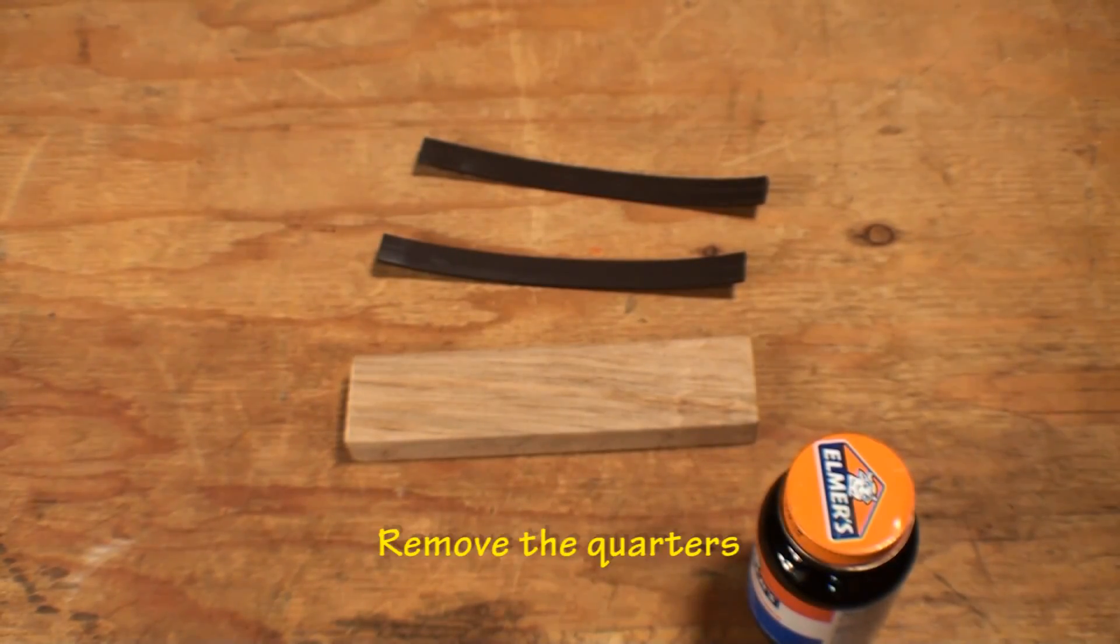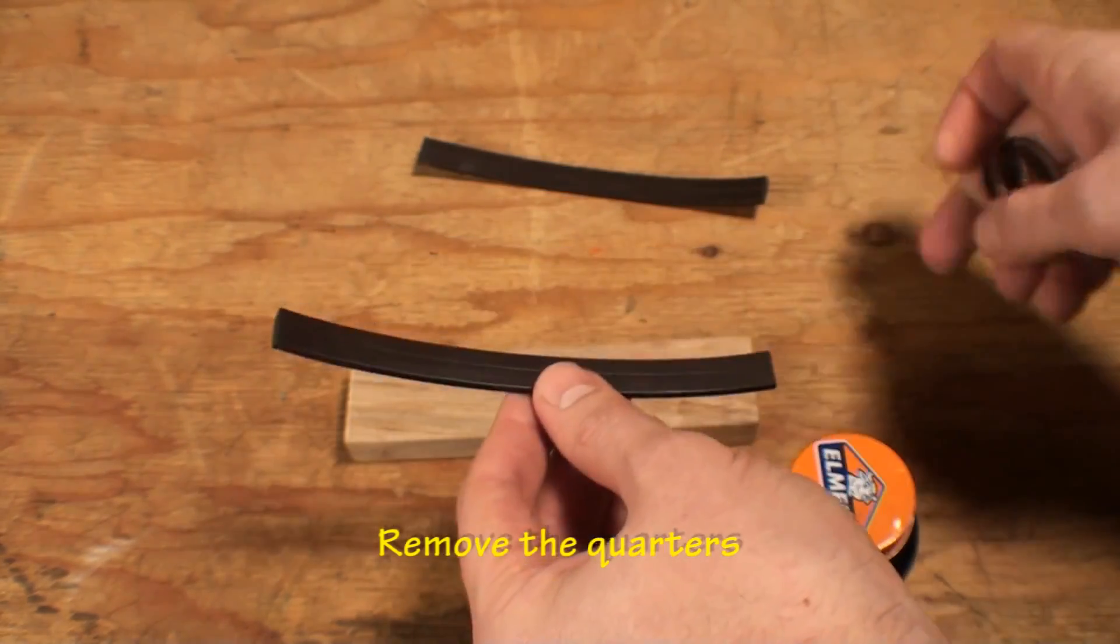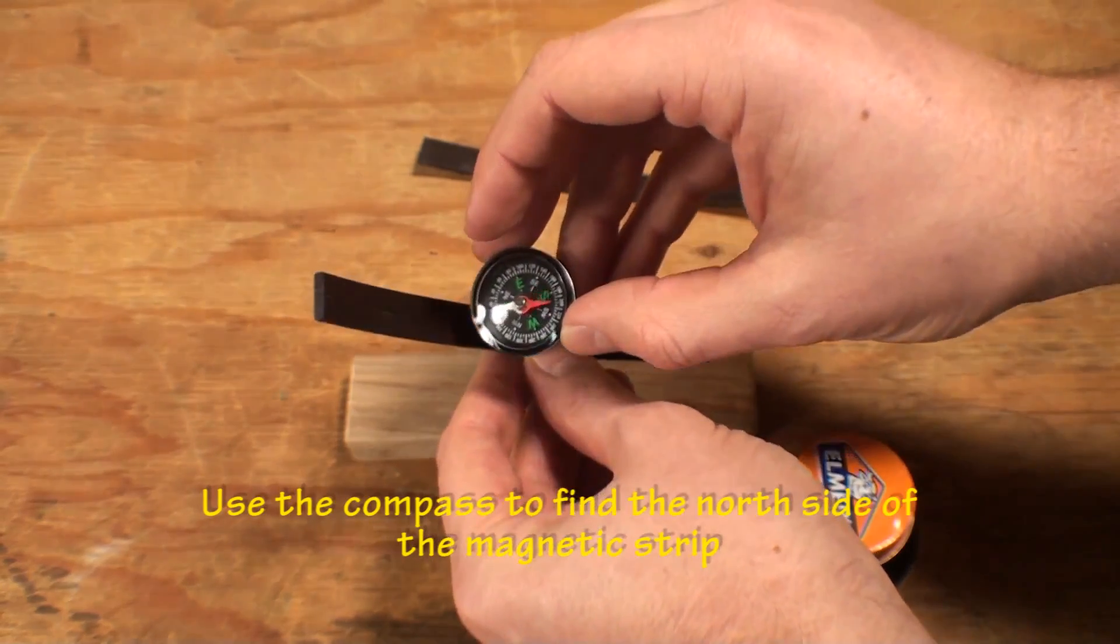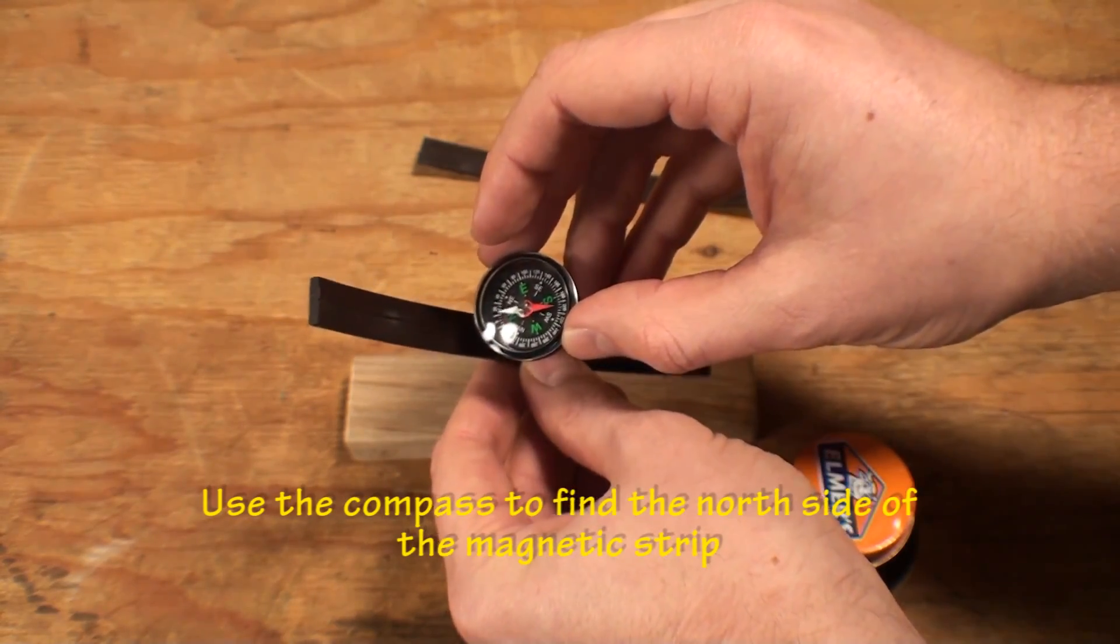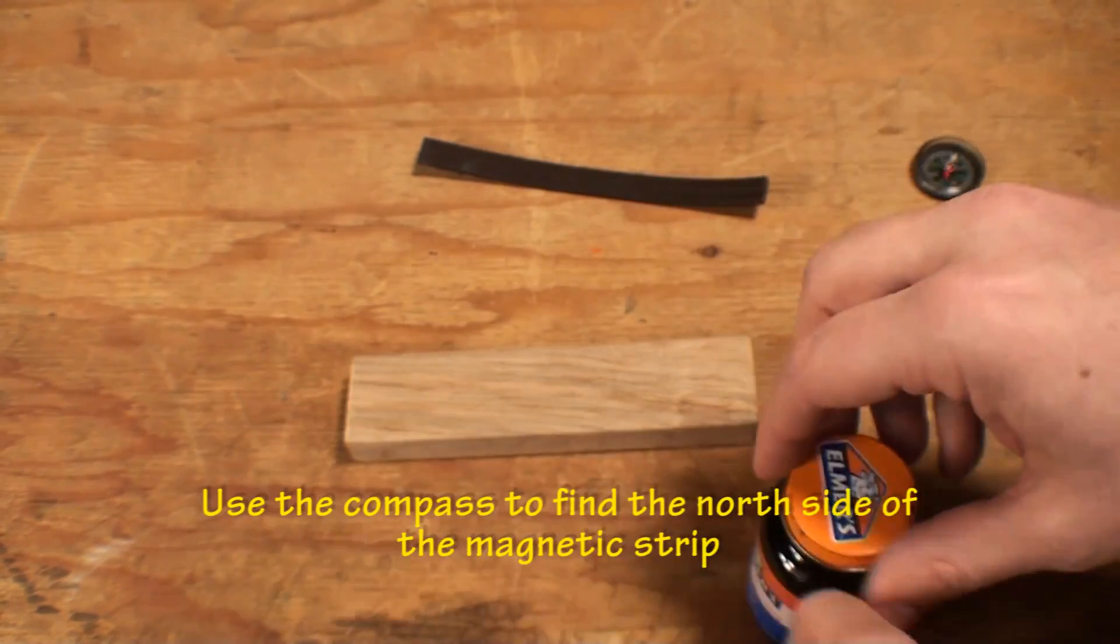Now it's time to create the train block. Remove the quarters and tape you attached to it earlier so the block is now bare. Take the compass and find the north side of the half inch by five and seven-eighths inch long high force magnetic strips.